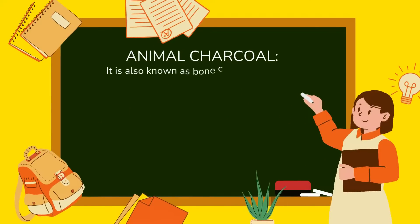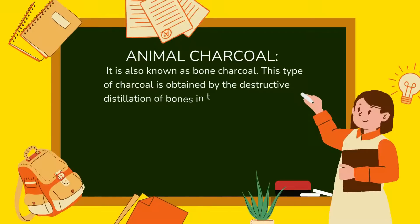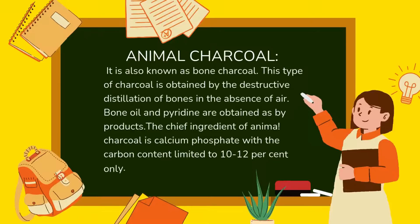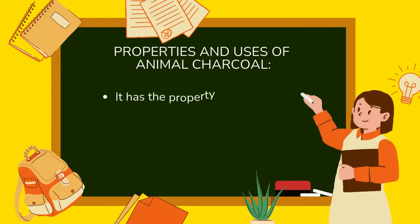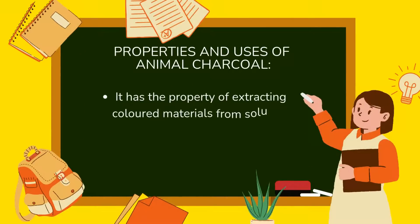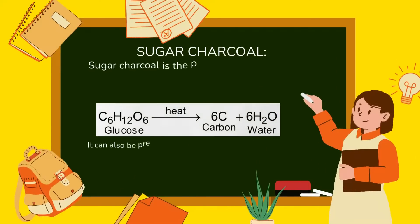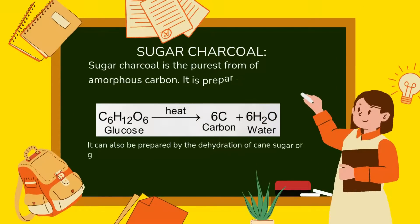Animal charcoal, also known as bone charcoal, is obtained by the destructive distillation of bones in the absence of air. Bone oil and pyridine are obtained as by-products. The chief ingredient of animal charcoal is calcium phosphate, with carbon content limited to only 10–12%. Properties and uses: it has the property of extracting colored materials from solutions, is easily wetted by liquids, and is extensively used to decolorize sugar.